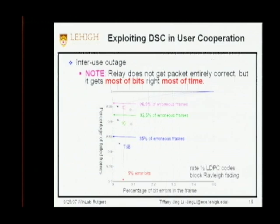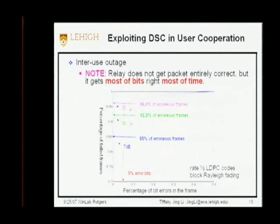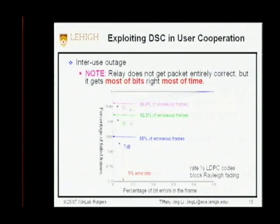To explore distributed source coding in user cooperation, I want to provide additional statistics first. Distributed source coding works best when sources are highly correlated. We analyze the case when inter-user outage happens — the relay does not get a clean copy. We check that among all erroneous frames, at 13 dB, 85% of the erroneous frames contain less than 5% of the error bits. In other words, although the relay does not get the packet entirely correct, it gets most of the bits right most of the time.